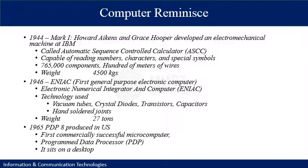This leads us to the first generation computers, where we typically classify a machine as a computer system. The first machine was built in 1944 and was named Mark 1. Two scientists — Howard Aiken and Grace Hopper — developed an electromechanical machine at IBM called the Automatic Sequence Controlled Calculator. The terms 'computer' and 'calculator' were used interchangeably. It was capable of reading numbers, characters and special symbols, and was very heavy, weighing about 4,500 kg.